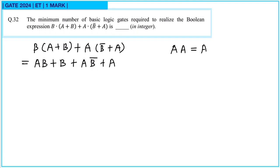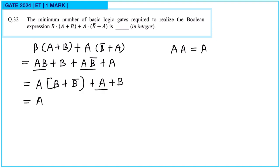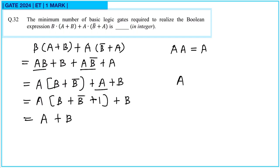Any input ANDed with itself gives the same thing. Now we can take A common. So this will be A(B or B bar), and AB. Here A is common, so this can be written as A(B or B bar or 1 or B). This will be one only. So it simplifies to A OR B, since any input OR 1 is one. So only one basic logic gate — an OR gate — is required.